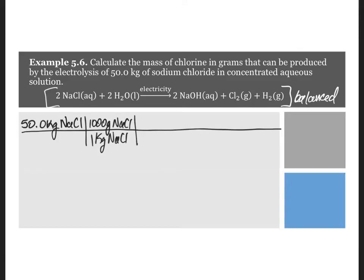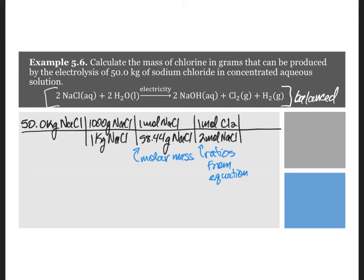Next, we need the molar mass of sodium chloride. Then, we use the mole ratios from the balanced chemical equation. Then, we use the molar mass of chlorine to find the number of grams.